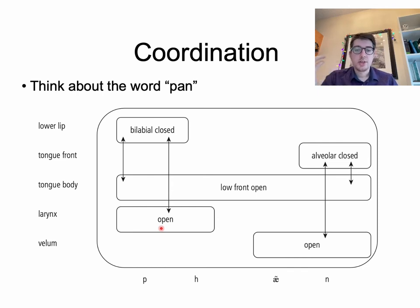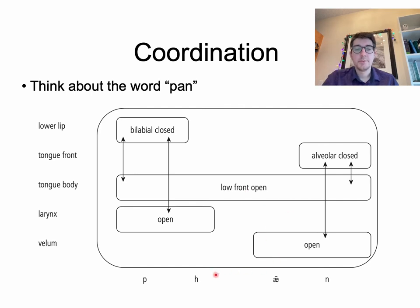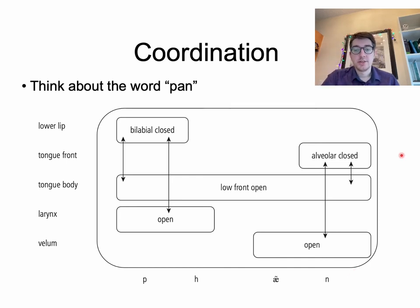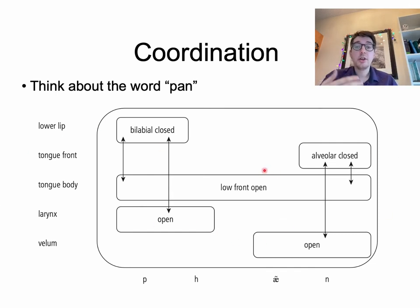Then a tongue body lowering gesture constitutes the vowel 'ash,' so you lower the tongue in order to make an ash sound. There is a little bit of aspiration here, and lastly the alveolar closing and velum opening constitute the 'n' sound. The gestures overlap in time — they begin and are in progress simultaneously.